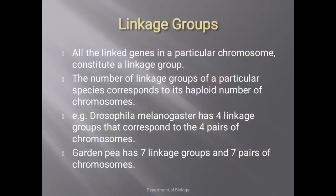Regarding linkage groups: all linked genes on a particular chromosome constitute a linkage group. The number of linkage groups of a species corresponds to its haploid number of chromosomes. Drosophila has four linkage groups, and garden pea has seven linkage groups.